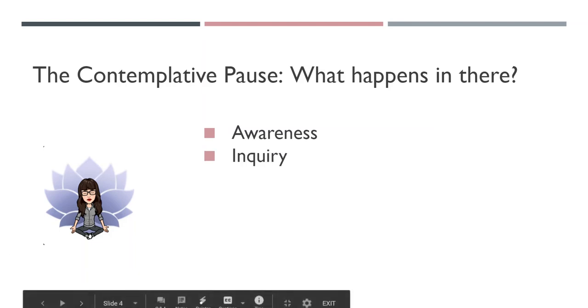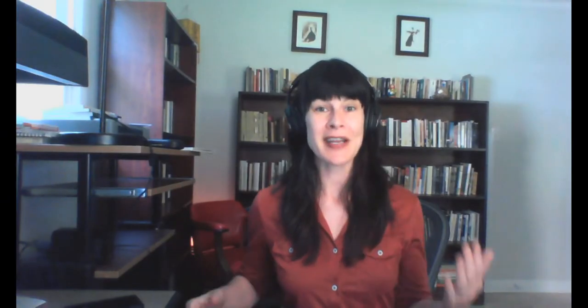The next step in my contemplative pause is inquiry. Here is where I check in with my values and my intentions and ask some questions. This is where I practice open awareness, reflection, and critical inquiry. I ask: is this how I want to be? Is this the most effective way to be considering my values and goals? I inquire how it is that I want to be, what my intentions are. For example, I may learn that I wish to respect my colleague, that I wish to be brave and stick up for myself, that I wish to do the best work possible.